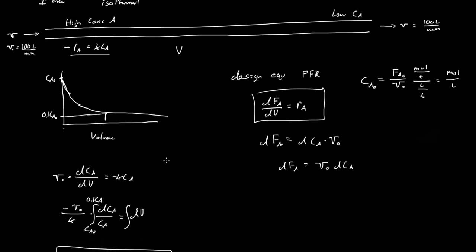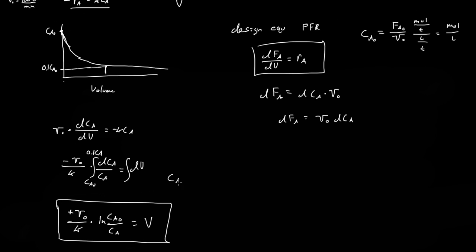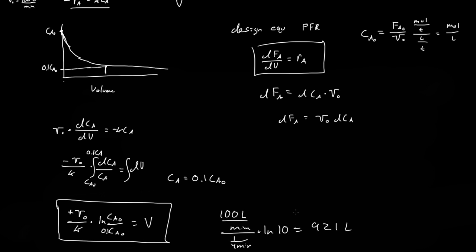Plugging in our values: k = 1/4 min⁻¹, V₀ = 100 liters per minute, and CA = 0.1·CA₀, so ln(CA₀/CA) = ln(10). We calculate V = (100 L/min)/(1/4 min⁻¹) × ln(10), which equals approximately 921 liters. This is the volume required for a plug-flow reactor to consume 90% of A.